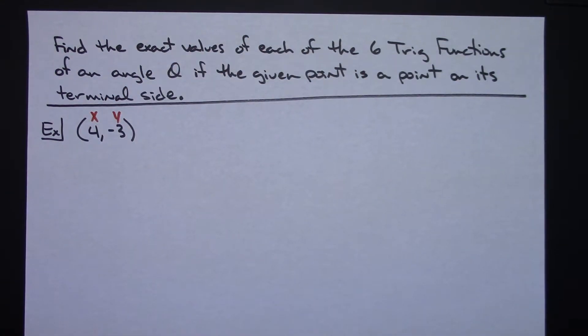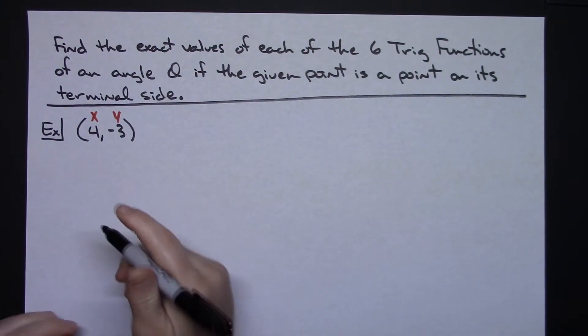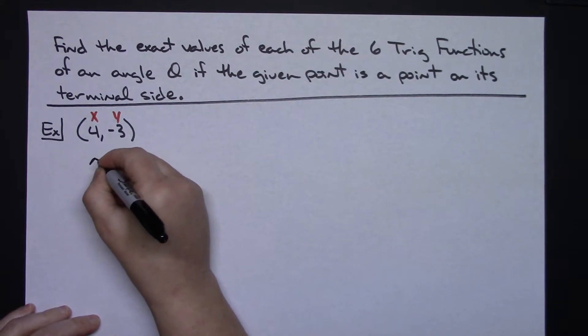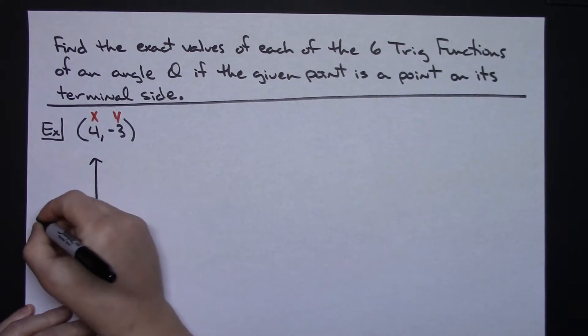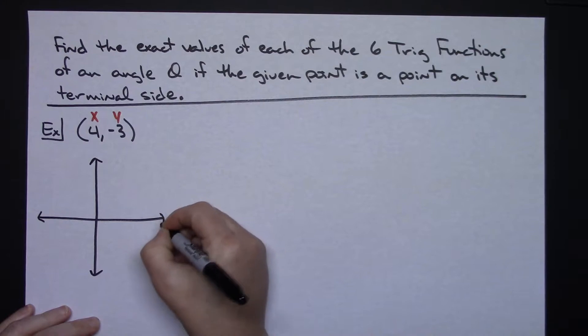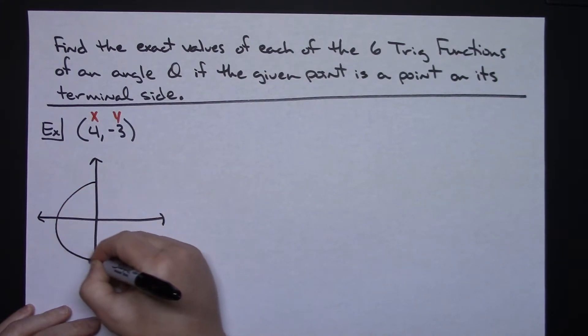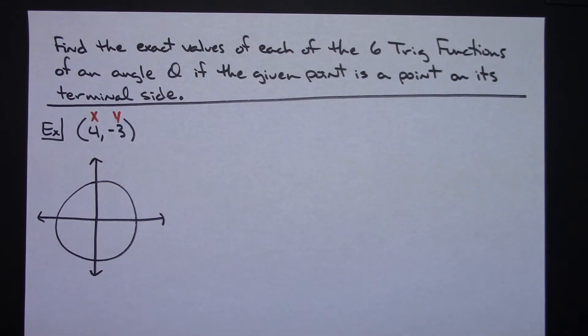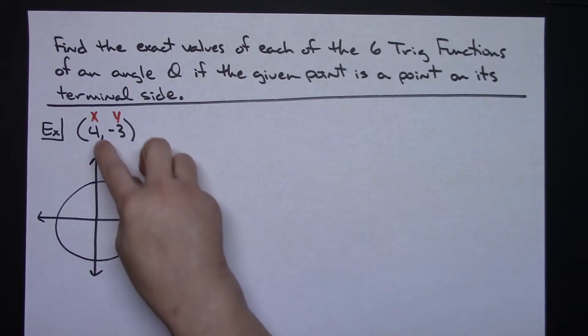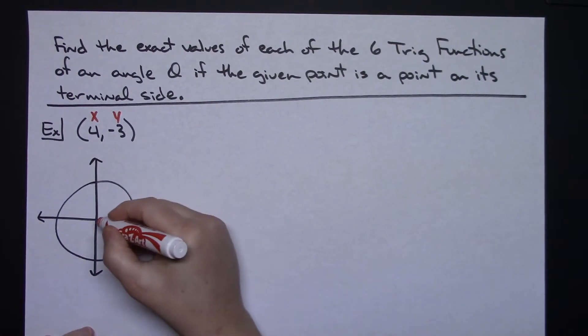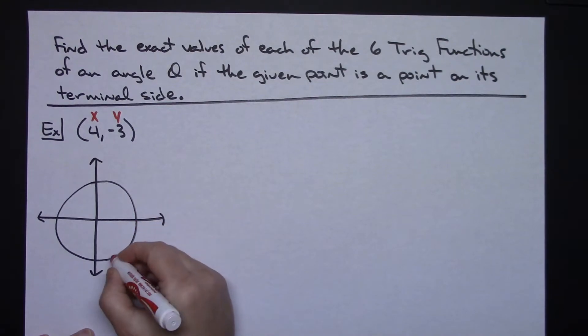Now let's go ahead and draw this out just so we can kind of visualize what quadrant it's in, that sort of thing. So if I do a rough little sketch here, we'll attempt to put our circle on. Not a really good circle, but we get the idea. Now point (4, negative 3). So 4 would be going to the right. Negative 3 is going to be down here.